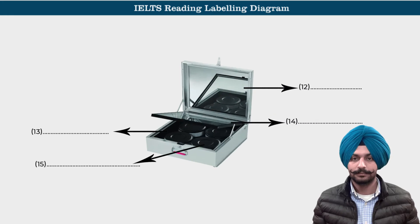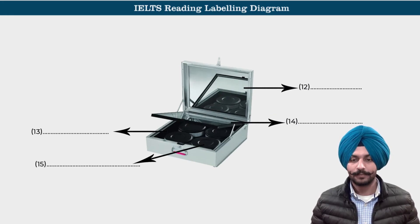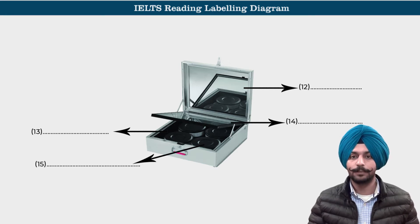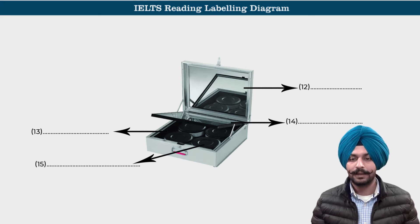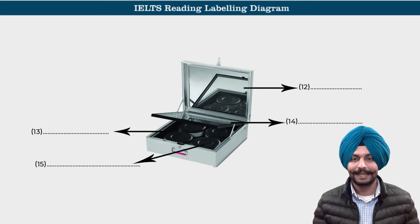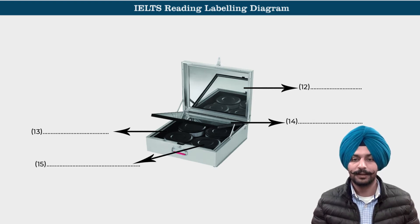For example, where they have written question 12, you can see this is something like a cover or the top portion — a lid type. Then you move to question 13, which is something that is stuck inside that cooker.